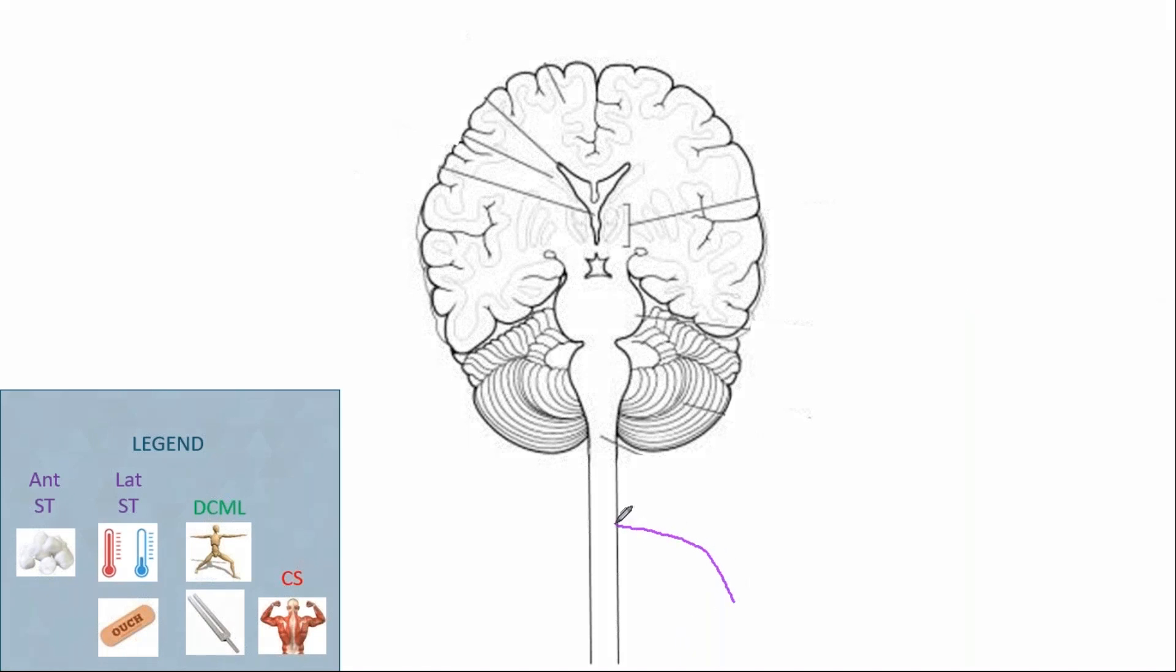Now the spinothalamic tract brings sensory information in to the spinal cord. It ascends the spinal cord one to two levels before crossing over within the spinal cord to bring that sensory information into the brain for processing.